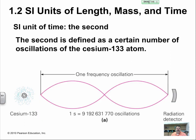One second is defined as a certain number of oscillations of cesium-133. In one second there are 9,192,631,770 oscillations of the cesium-133.